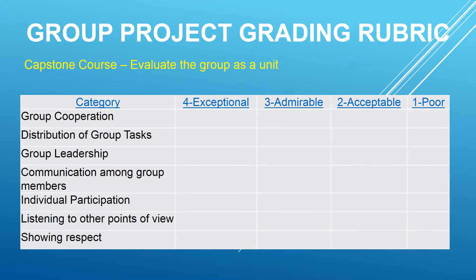Group project grading rubrics were used for this class. They were evaluated as a unit — or as we say, group as a whole. There are seven categories on the rubric and four possible scores. Our capstone groups fall within two scoring areas: four, exceptional, and three, admirable, presented in the following slides.